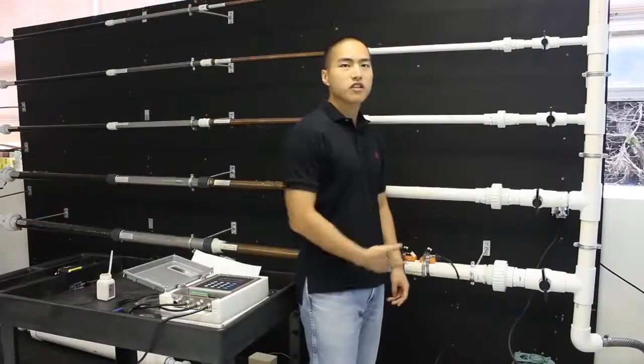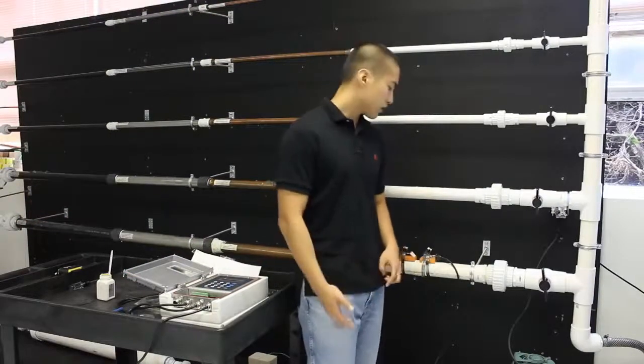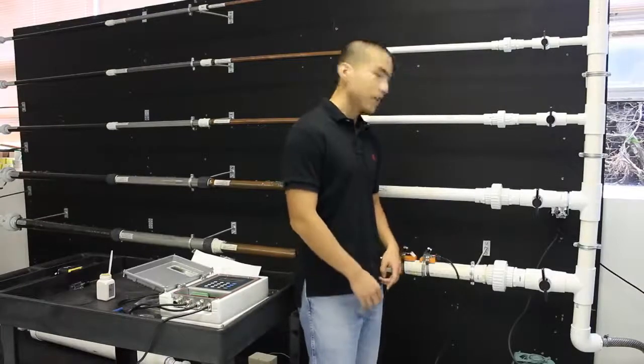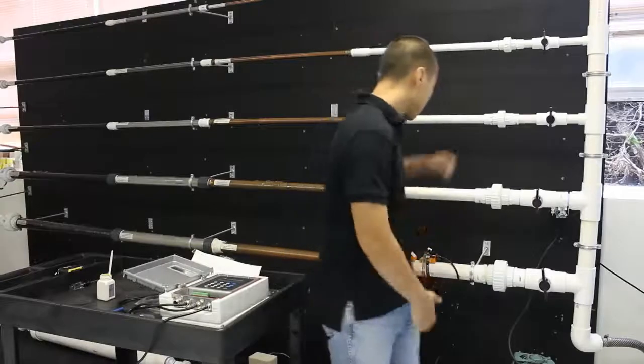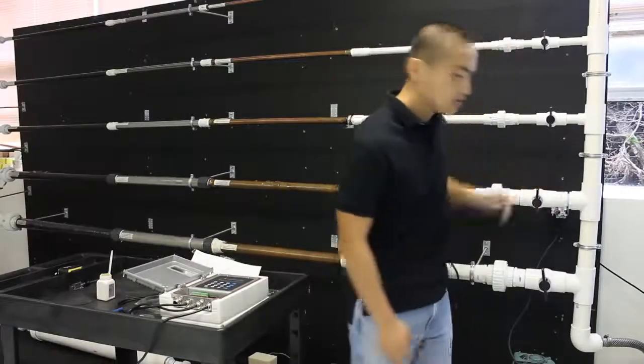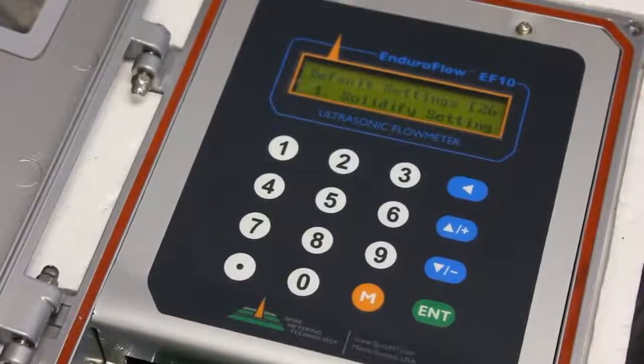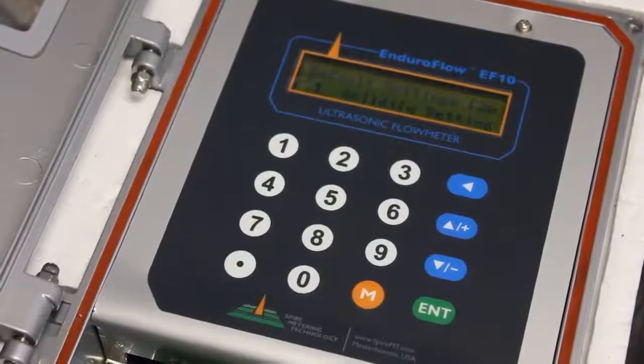Now that we've mounted both of our transducers on, we're ready to verify the signal to make sure that the measurements are as accurate as possible. Now we're just going to turn the pipe on. Now that we've mounted our transducers and we have the water flowing, we're ready to check the strength and quality of our signal.